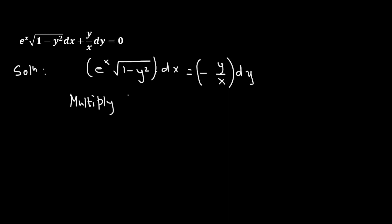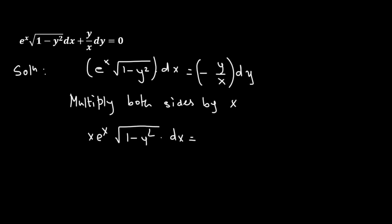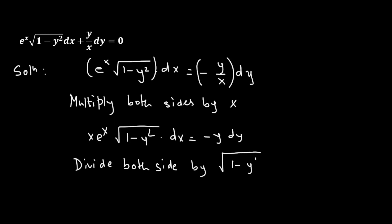So what we will do is multiply both sides by x. That is going to take care of the x that's present on the right hand side. So we have x times e raised to the power of x times square root of 1 minus y squared times dx equals to negative y dy. Now we need to take care of the square root of 1 minus y squared on the left hand side, so we will divide both sides by square root of 1 minus y squared. That gives us x e raised to the power of x dx equals to negative y divided by square root of 1 minus y squared, multiplied by dy.